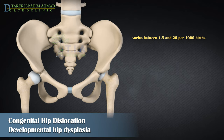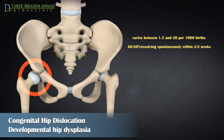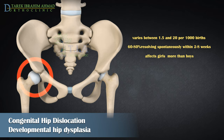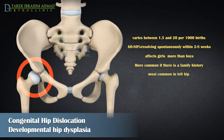The reported incidence of developmental dysplasia of the hip varies between 1.5 and 20 per 1,000 births, with the majority of abnormal hips resolving spontaneously within two to eight weeks. DDH affects girls more than boys, and is more common among babies born into families with a history of developmental dysplasia of the hip. The left hip is affected three times more often than the right.